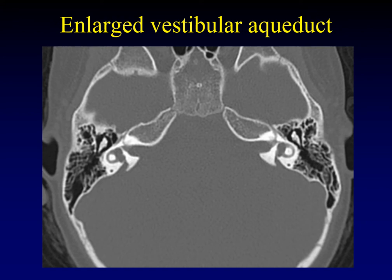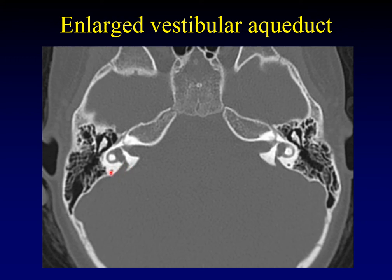The enlarged vestibular aqueduct is the most common identifiable form of congenital hearing loss. The normal vestibular aqueduct runs from the back of the vestibule to the posterior fossa, allowing recycling of endolymph and perilymph back into the CSF. The normal vestibular aqueduct is about the same diameter as a normal semicircular canal — you can use that as a reference point. An enlarged vestibular aqueduct is roughly three times that diameter. It is usually bilateral.